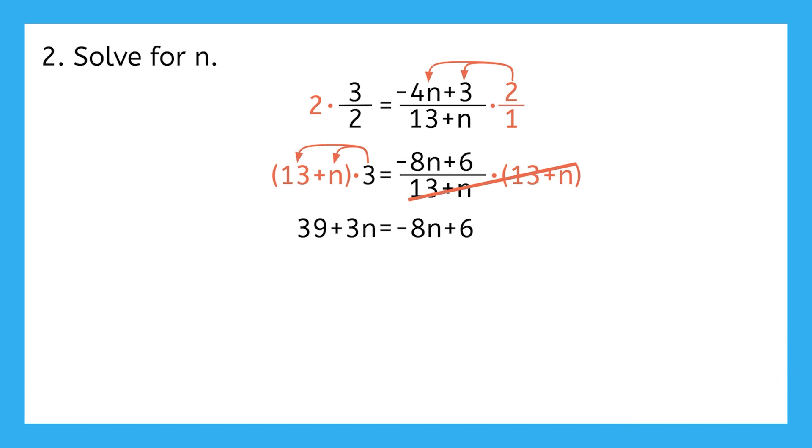Right now I have n on both sides of this equation. I can't isolate a variable if it's in two places at once, so I need to bring those together. I'm going to add 8n to both sides. Now I'll subtract 39 from both sides, and divide both sides by 11. I've run out of room here, so I'm going to put my final answer of negative 3 for n off to the side here.